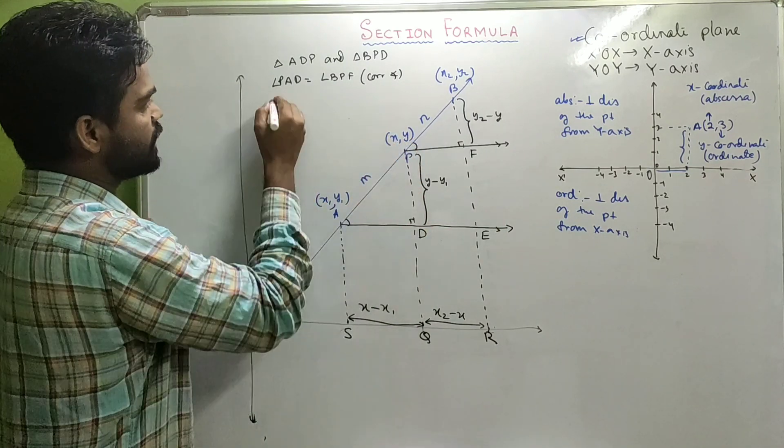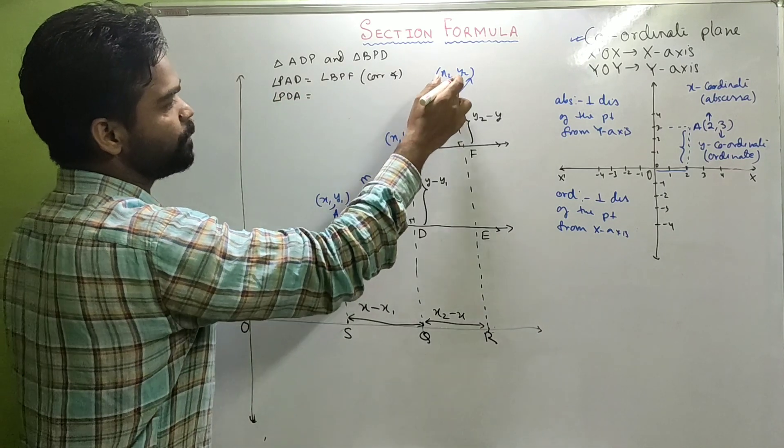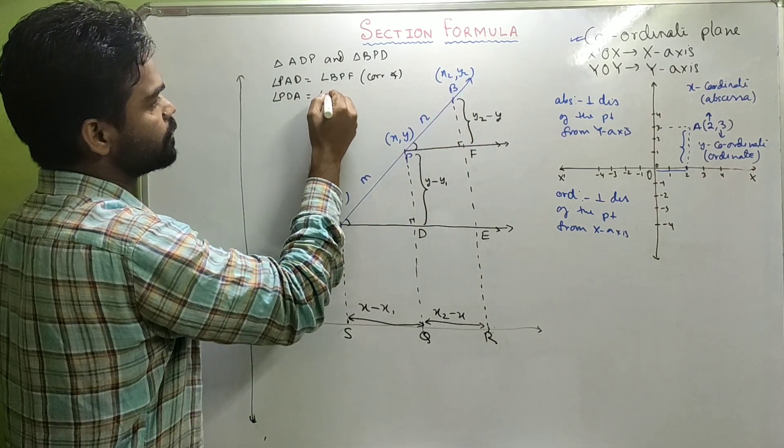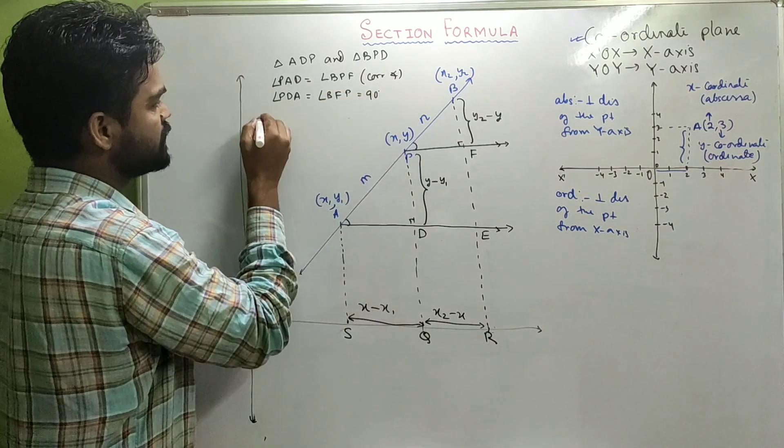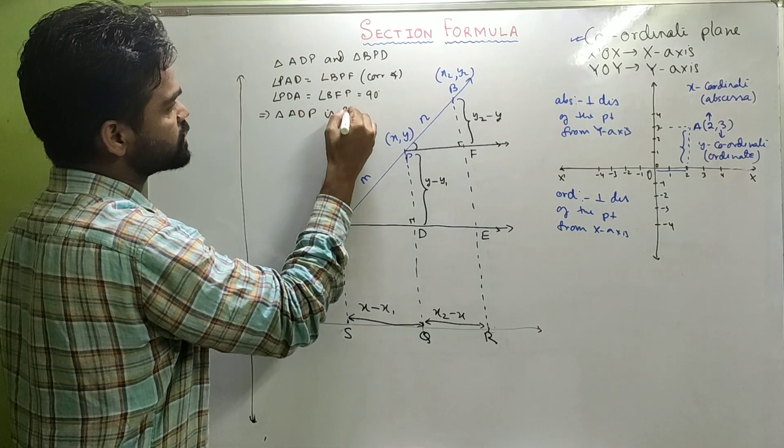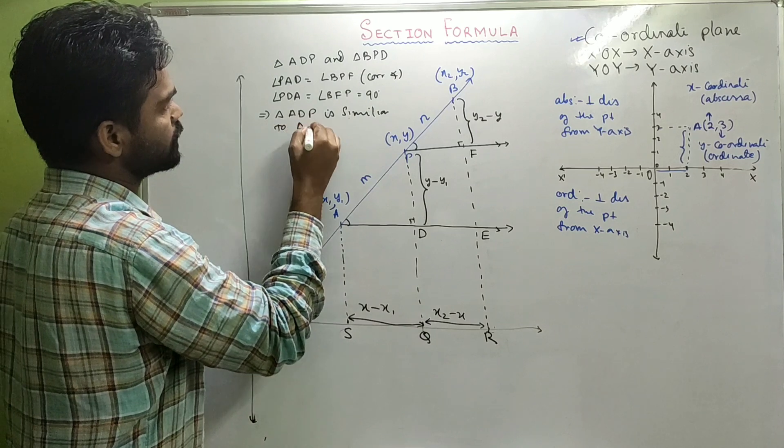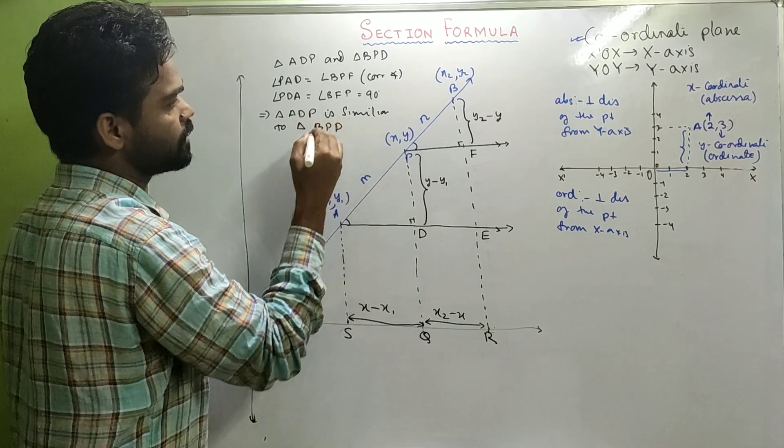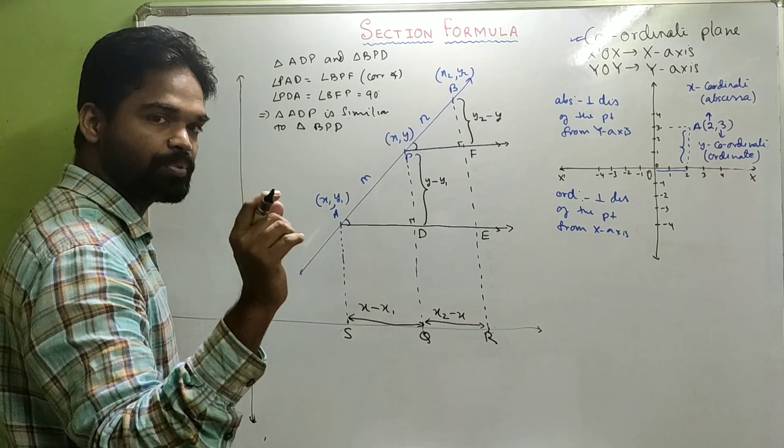This is equal to 90 degrees, which means triangle ADP is similar to triangle BPF. And if two triangles are similar, the sides are proportional.